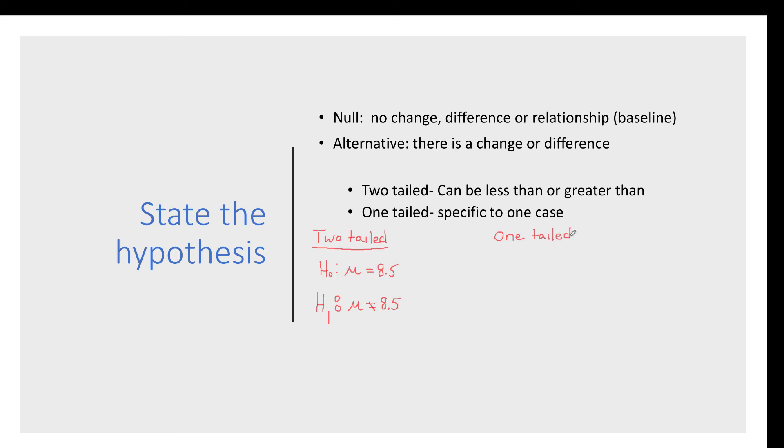In that case, I would be specific. I might think that I'm faster than 830. And I state my alternative hypothesis first.